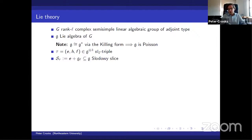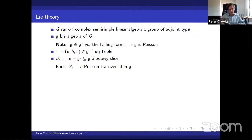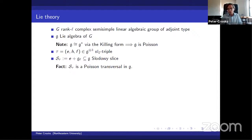This turns out to interact very nicely with the Poisson structure on the Lie algebra. The Slodowy slice turns out to be a Poisson transversal inside of the Lie algebra G. Recall, a Poisson transversal in a smooth Poisson variety is a locally closed sub-variety with the property of being transverse to all of the symplectic leaves, such that its intersection with every symplectic leaf is a symplectic sub-variety of that leaf. This and a great deal more is true with the Slodowy slice S_tau.